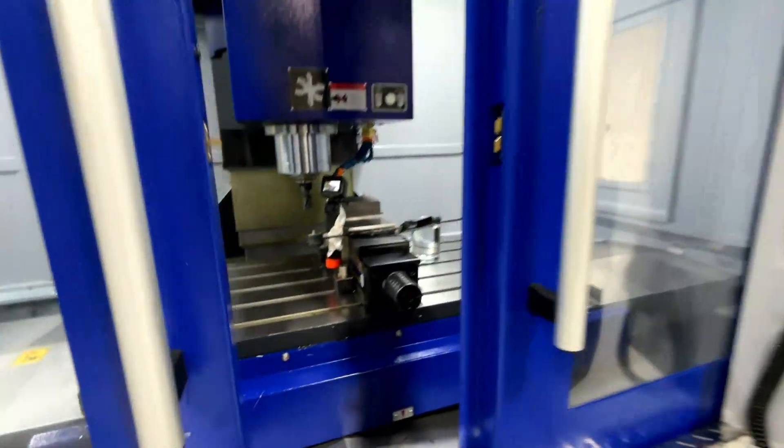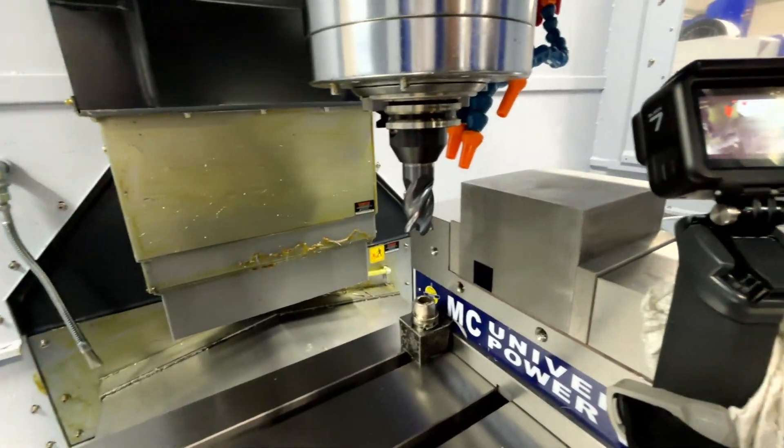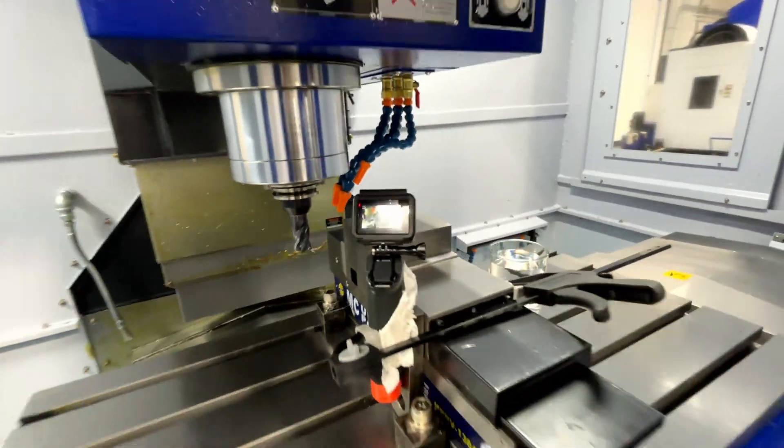We got a nice chunk of 1018 steel in our vise there. We're going to take this one inch diameter Harvey 1 TE, drop down an inch and put some slots in here and we'll see how quick we can do it.